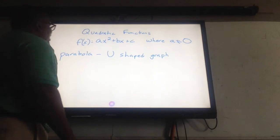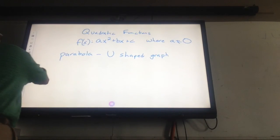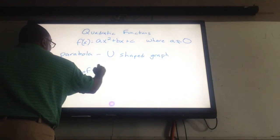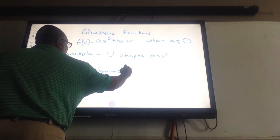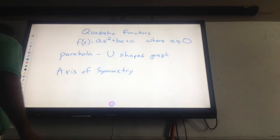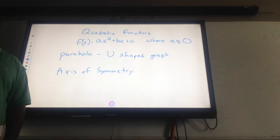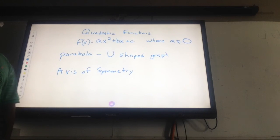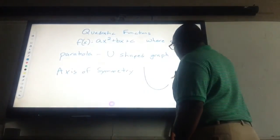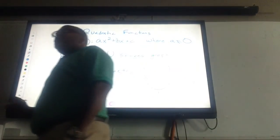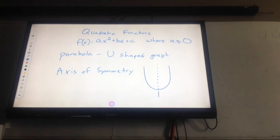That's a parabola. Now, in each parabola we have something called the axis of symmetry. You've heard it before. What is the axis of symmetry? If I took my graph, the axis of symmetry cuts it into equal portions — it cuts it right down the middle. That's what the axis of symmetry is.